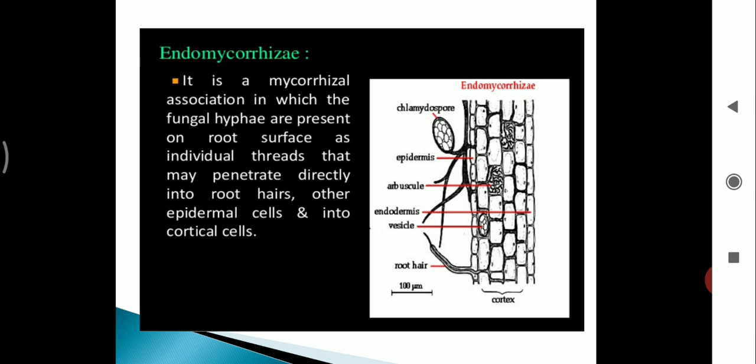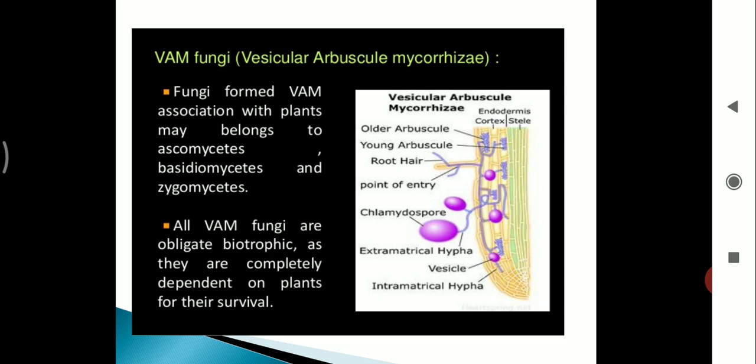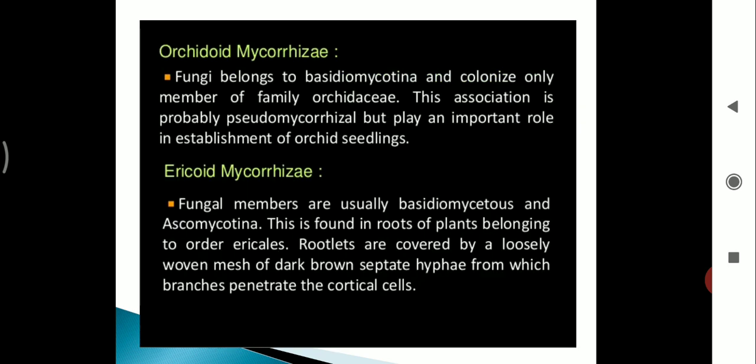First, endomycorrhizae. It is a mycorrhizal association in which the fungal hyphae are present on root surface as individual threads that may penetrate directly into root hairs and other epidermal cells and into cortical cells. We already saw VAM fungi. Now, orchid mycorrhizae. Fungi belong to Basidiomycotina and colonize only members of family Orchidaceae. This association is probably pseudomycorrhizae but plays an important role in establishment of orchid seedlings.